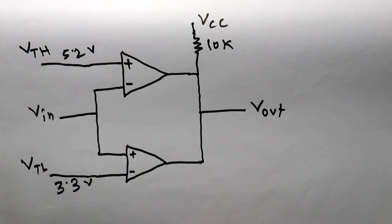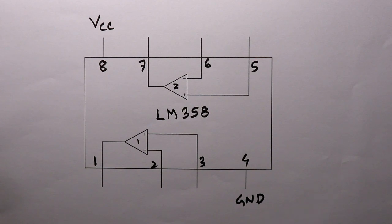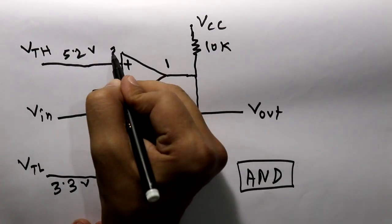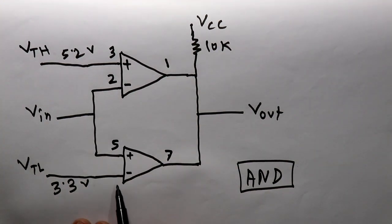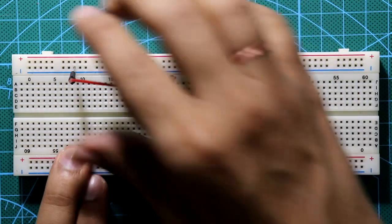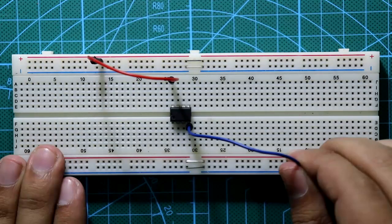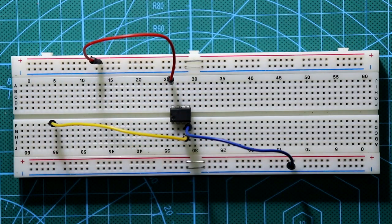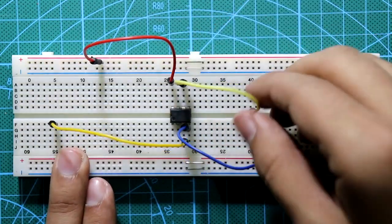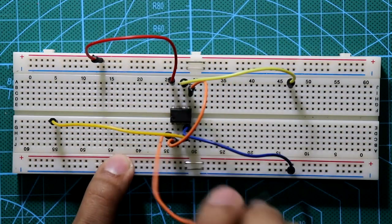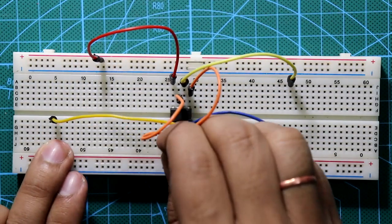Whenever the input voltage falls between these two thresholds, both comparator outputs will be high, which is why we need an AND function. We have seen the pin diagram before — now we need both comparators. Pin number 1 is the output of comparator 1, pin number 7 is the output of comparator 2, pin number 3 is the non-inverting input, pin number 2 is the inverting input, pin number 5 is the non-inverting input for comparator 2, and pin number 6 is the inverting input of comparator 2. Pin numbers 2 and 5 are connected together, and both outputs — pins 1 and 7 — are connected together.